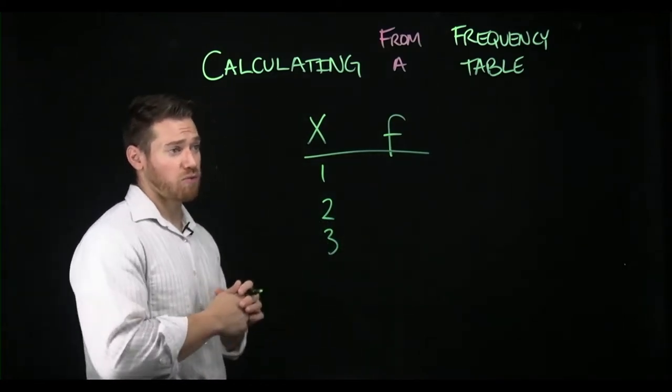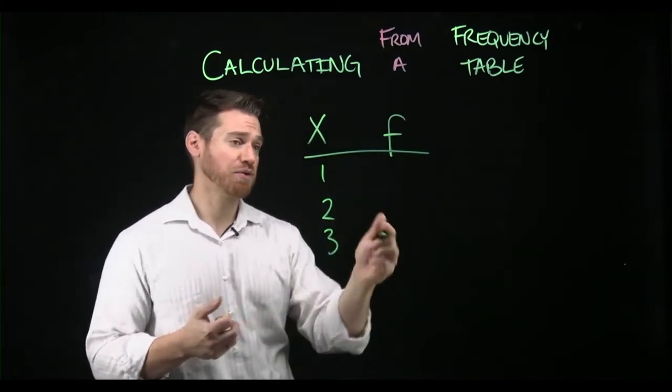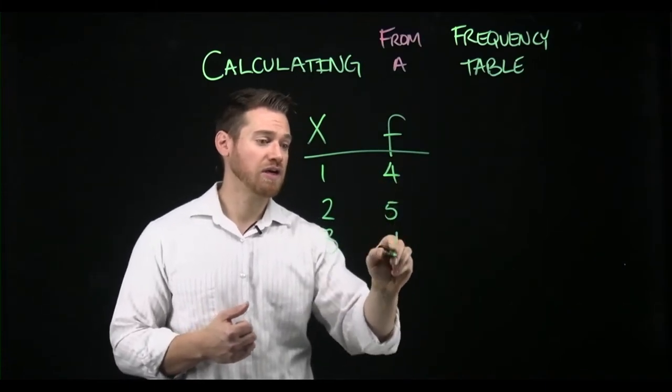So say that I have these scores here, one, two, and three, and they occur with the frequency four, five, and one.